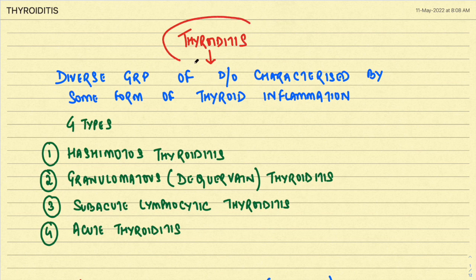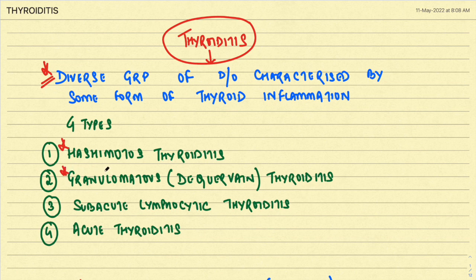What is thyroiditis? It is a diverse group of disorders characterized by some form of thyroid inflammation. There are four main types: Hashimoto's thyroiditis, granulomatous or de Quervain's thyroiditis, subacute lymphocytic thyroiditis, and acute thyroiditis.